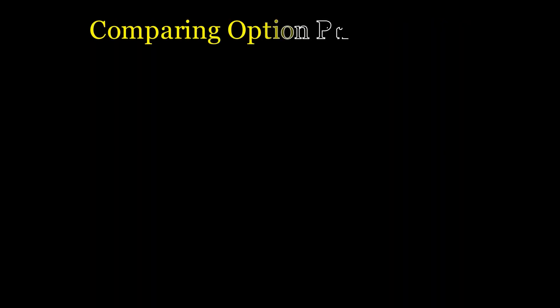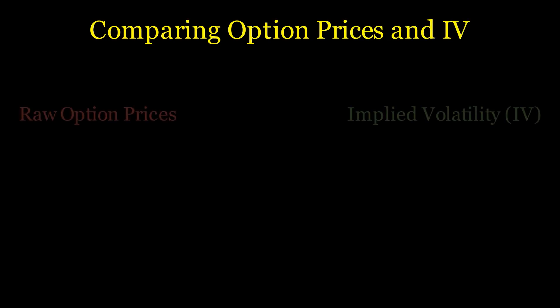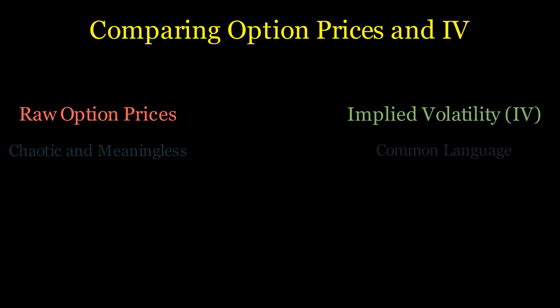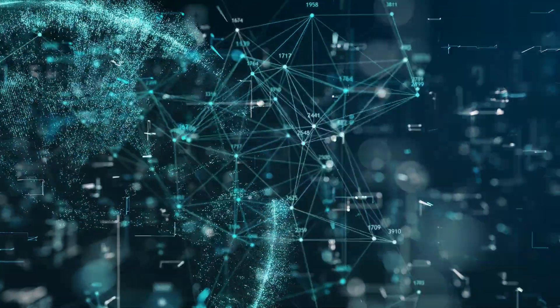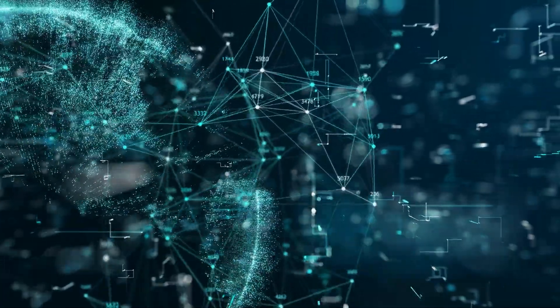Think of it like this: comparing raw option prices across different stocks would be chaotic and meaningless, because the prices are influenced by so many different factors — stock price, time to expiration, volatility, and more.